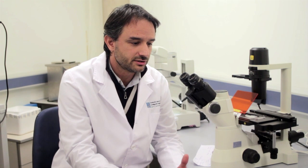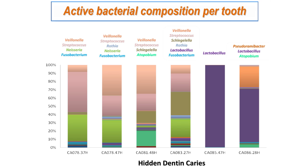When we look at the active bacterial composition per individual tooth, we see that it is entirely different between caries lesions. In some of them, for example, the community is dominated entirely by Lactobacillus. In other cases, this genus is completely absent and there is a different set of organisms as we can see in this image. Therefore, we conclude that caries is a polymicrobial pathology caused by different bacterial consortia.